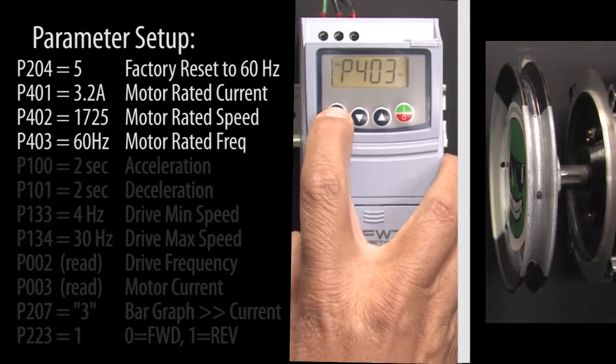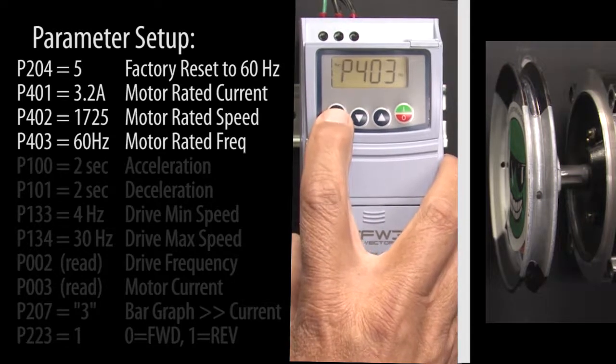Parameter 403 is the motor's max frequency. 60 Hz is what we want so hit P to accept that.